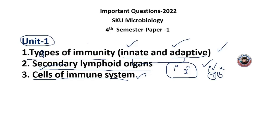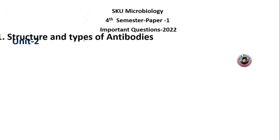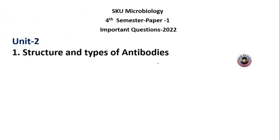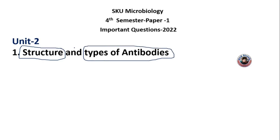This is the second unit. Structure and types of antibodies are very important. The long-answer question is the structure of antibodies, and there are also types of antibodies to know. If the question asks for structure and antibodies, explain the structure fully, then cover the types of antibodies. Be careful, as question papers may ask for different types and types.